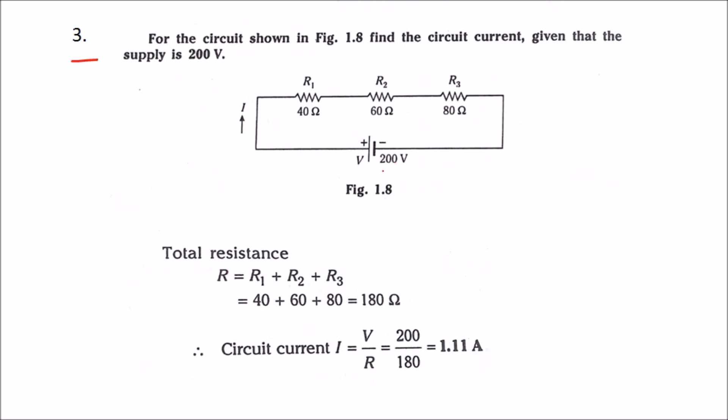We are given a supply voltage of 200 volts. Here we need to find the circuit current, which is I. As the resistances are in series, we need to add the resistance values to find the equivalent resistance value.